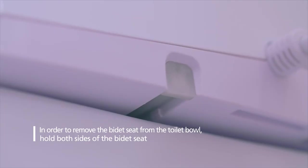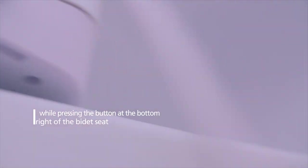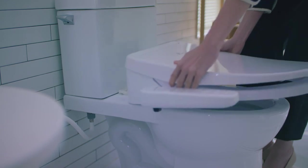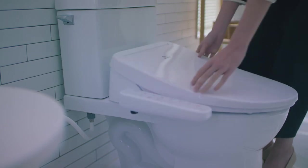In order to remove the bidet seat from the toilet bowl, hold both sides of the seat while pressing the button at the bottom right of the bidet seat. To reassemble, slide the bidet seat into the mounting plate until you hear a click sound.